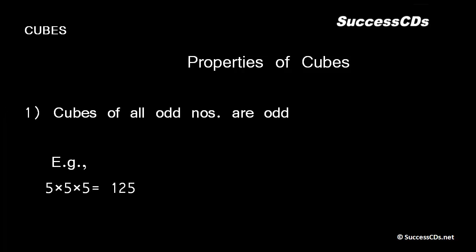Properties of Cubes. Cubes of all odd numbers are always odd numbers. For example, 5 cube is 125, 3 cube is 27, and 7 cube is 343. These are all odd numbers.